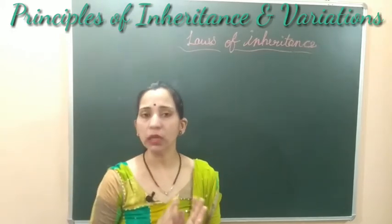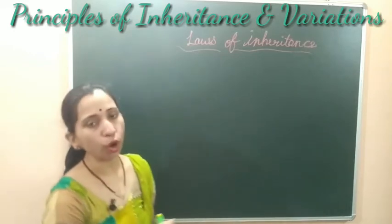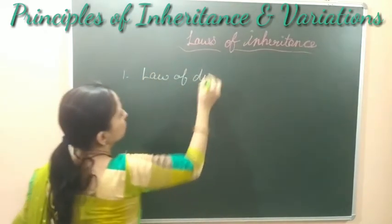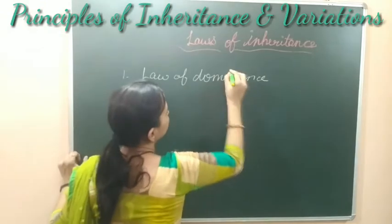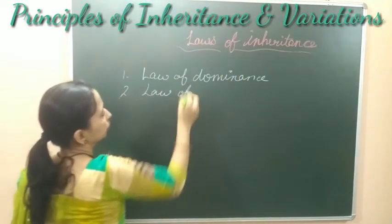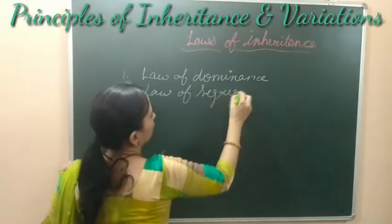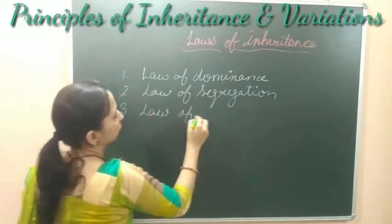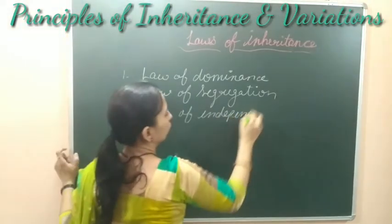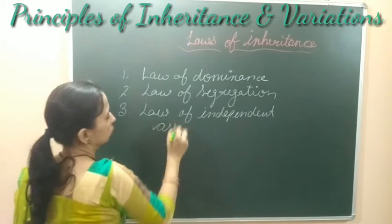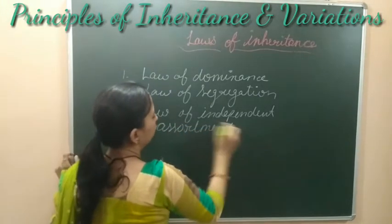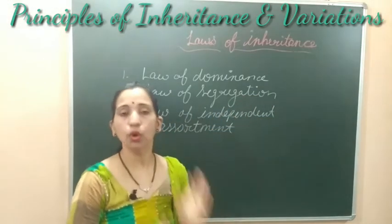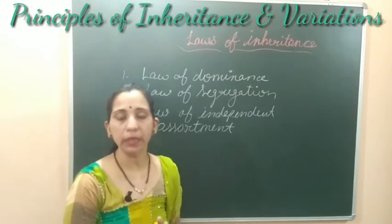We will discuss the three important laws of inheritance. The first law is known as the law of dominance. The second law is the law of segregation, also known as the law of purity of gametes. And the third law is the law of independent assortment.